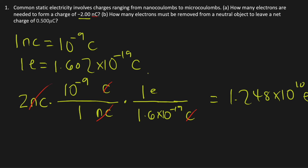Part B: How many electrons must be removed from a neutral object to leave a net charge of positive 0.5 microcoulombs? In order to have a charge of positive 0.5 microcoulombs, a charge of negative 0.5 microcoulombs must be removed so that the object has an excess positive charge of 0.5 microcoulombs.